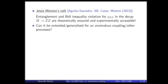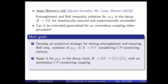In that previous work, what we showed was that entanglement and Bell inequality violation are both theoretically ensured and experimentally accessible when dealing with a pair of Z bosons coming from a Higgs decay. So one may ask: can this result be extended when considering anomalous coupling between the Higgs and the Z bosons, or even further, when dealing with other generalized processes? These are the questions we have answered in this work.